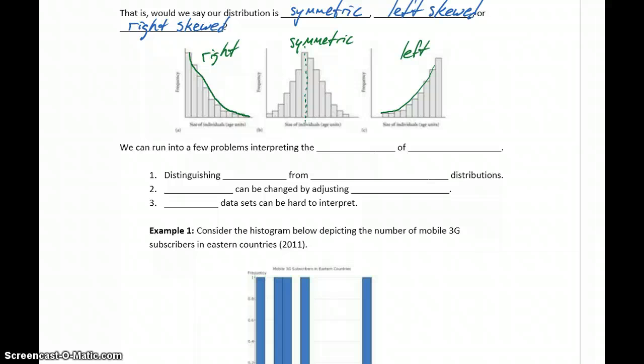So we can construct histograms, we can talk about shape, but we can run into some problems when we interpret shape based off histograms.